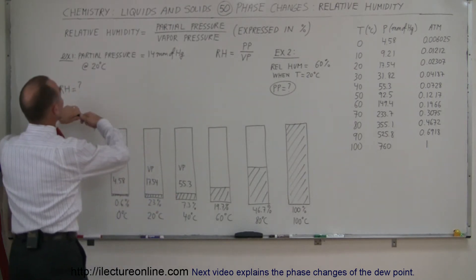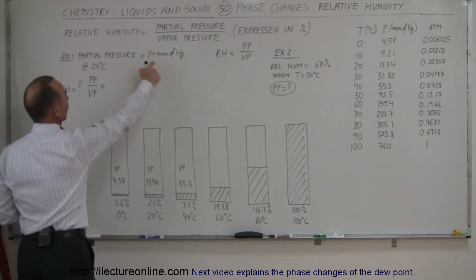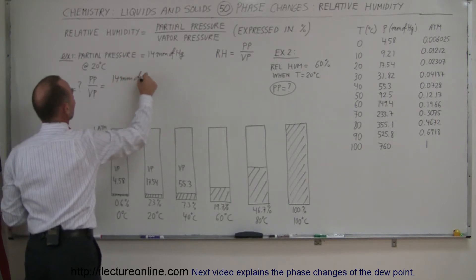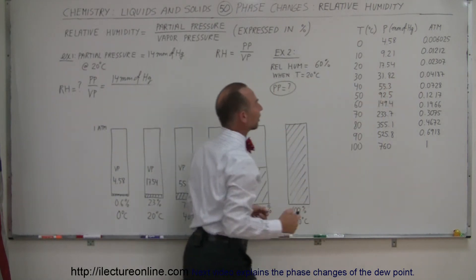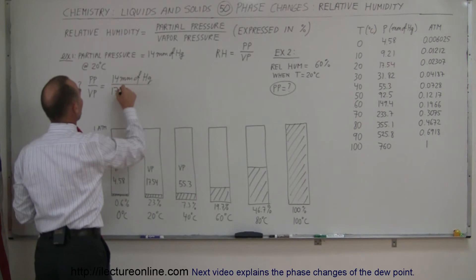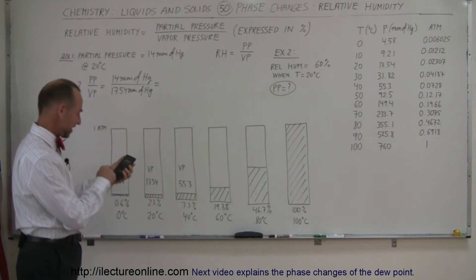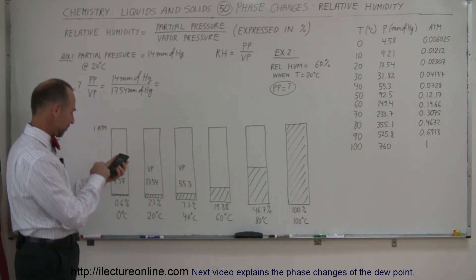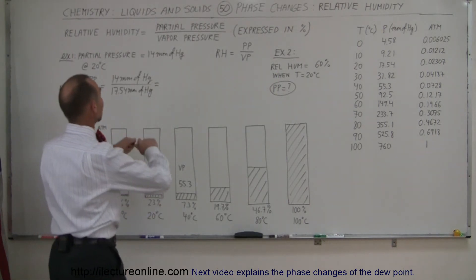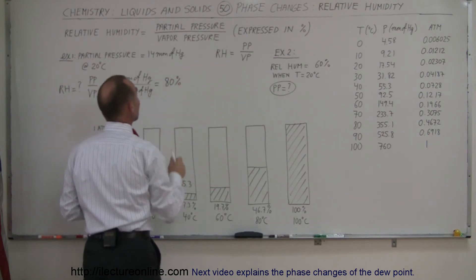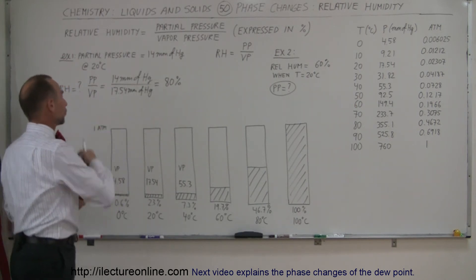Therefore, the relative humidity by definition — which is equal to the partial pressure divided by the vapor pressure — the partial pressure is what we measure: 14 millimeters of mercury, divided by the vapor pressure, which is the maximum pressure water vapor can be at 20 degrees centigrade, which is 17.54 millimeters of mercury. 14 divided by 17.54 equals 79.8, let's round it off to 80%. So the relative humidity is 80%, meaning the amount of water vapor in the air is 80% of what the air can hold at 20 degrees centigrade.